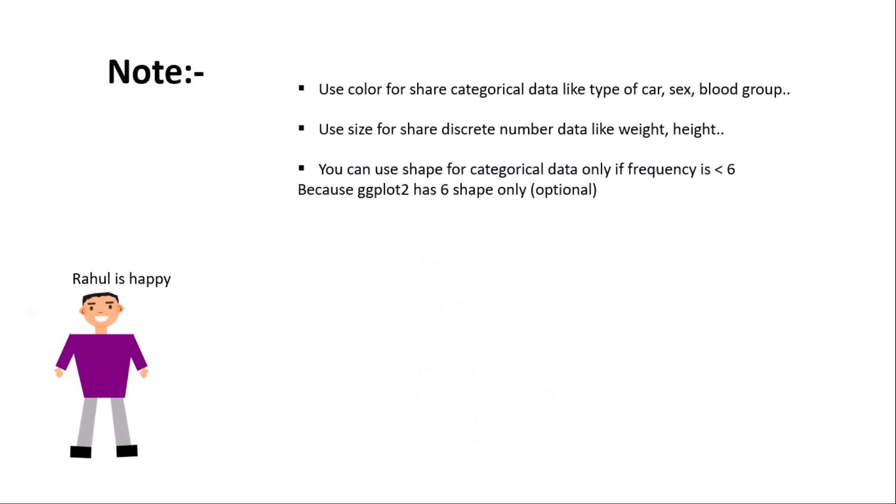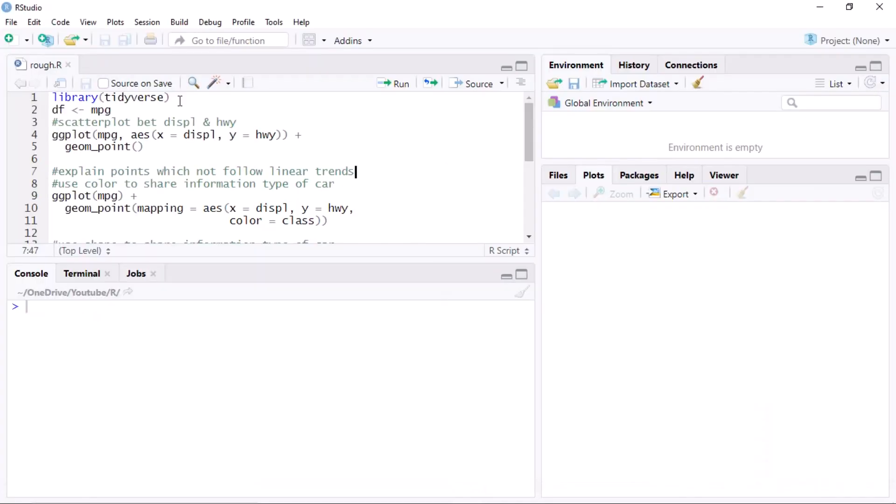Rahul is now happy and solved his problem. Keep one thing in mind: use color for sharing categorical data like type of car, sex, or blood group. Use size to convey discrete numerical data like weight or height. You can use shape for sharing categorical data, but I personally don't recommend it because ggplot2 only has six shapes — so you can use shape only if the number of classes is six or less.